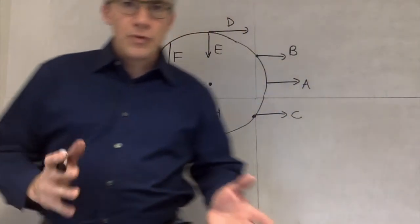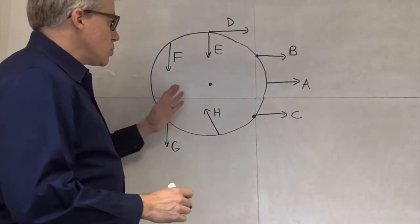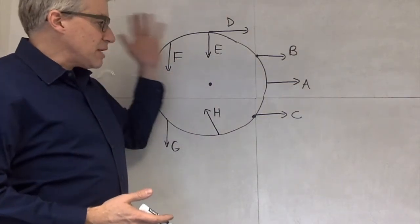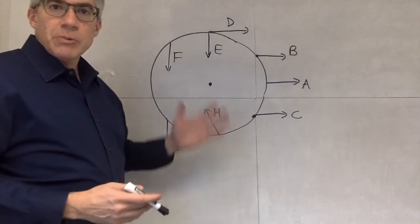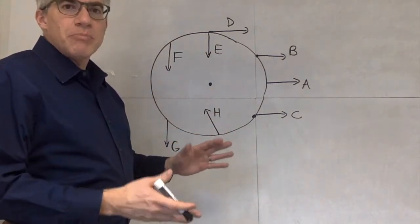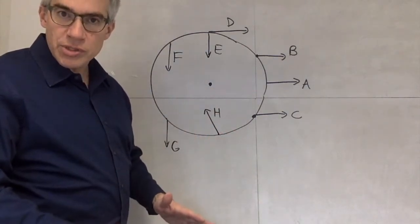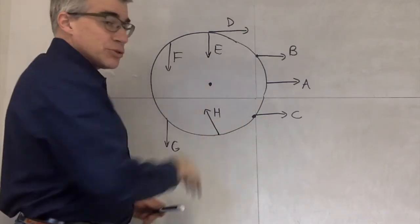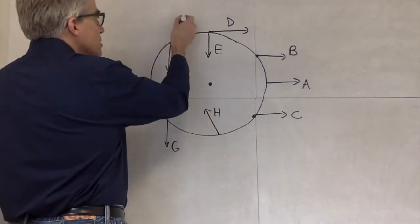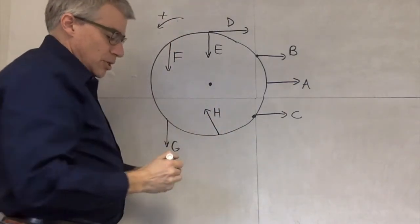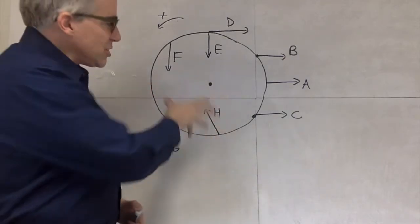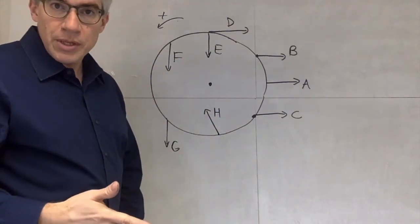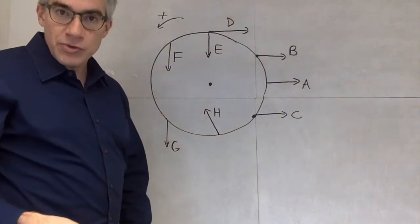Are torques positive or negative? We have a pivot point here at the center of this circle, and we have a whole set of forces. We'd like to know: are these making positive torques or negative torques? Positive is defined to be counterclockwise. Any force that would tend to twist this wheel counterclockwise is a positive torque. Anything that would twist it clockwise is a negative torque.